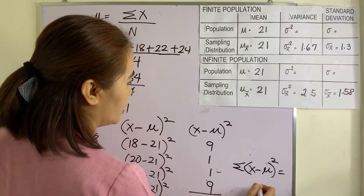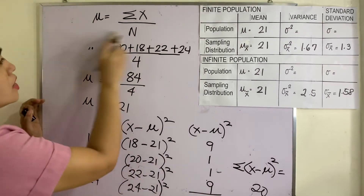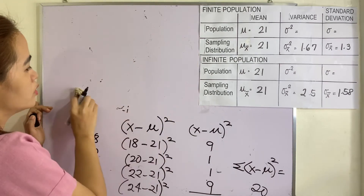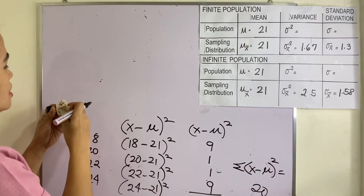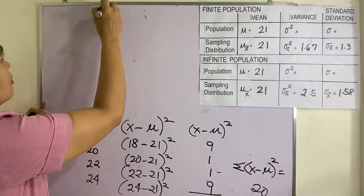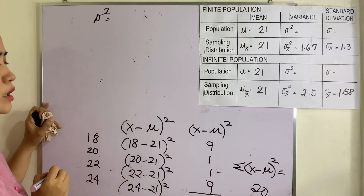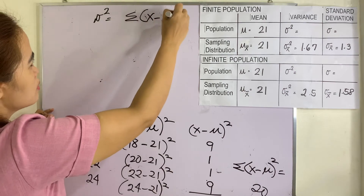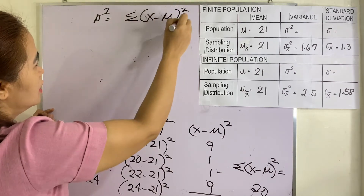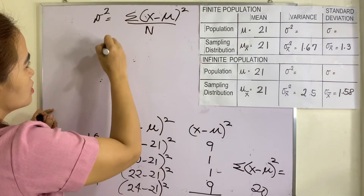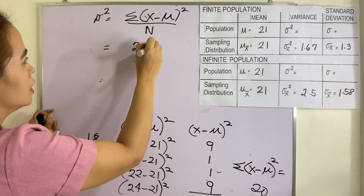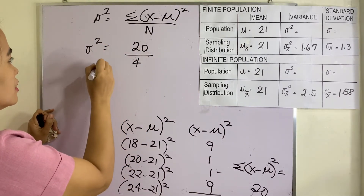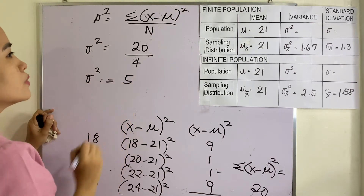So (x minus mu) squared gives us: negative 3 squared is 9, negative 1 squared is 1, 1 squared is 1, and 3 squared is 9. The summation of (x minus mu) squared equals 20. The formula for variance uses this summation divided by N, so this is 20 divided by 4, giving us a variance of 5.